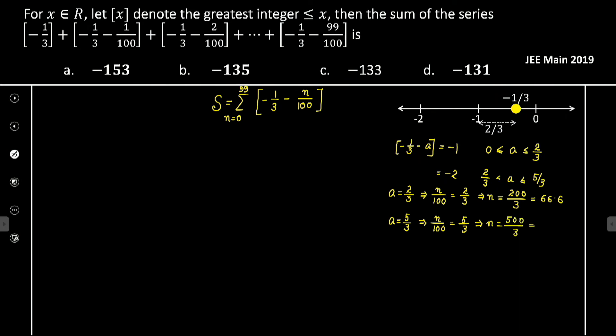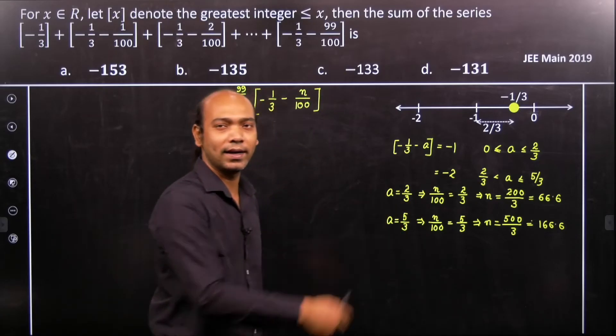That implies n equals actually 166.6 approximately.